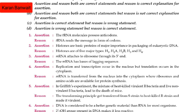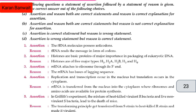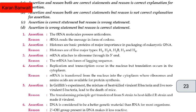Let us go with the second one. Assertion: histones are basic proteins of major importance in the packaging of eukaryotic DNA. Reason: histones are of 5 major types — H1, H2A, H2B, H3 and H4. The right option will be B — assertion and reason both are correct but reason is not the correct explanation for assertion.